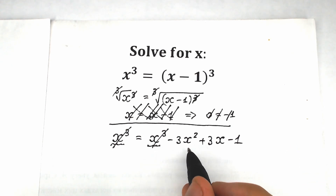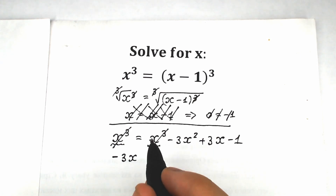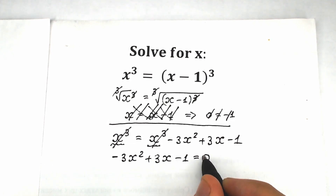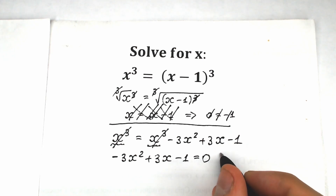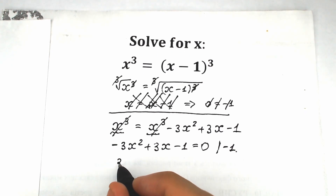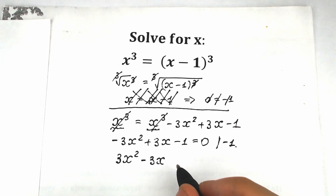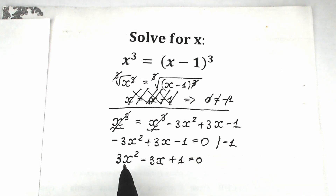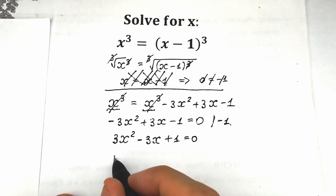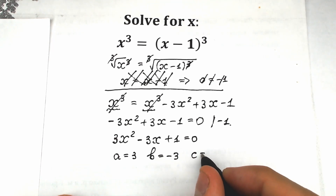After canceling x cubed from both sides, we still have the remaining expression. Let's rewrite it: minus three x squared plus three x minus one equals zero. Multiplying both sides by minus one gives us three x squared minus three x plus one equals zero. This is a quadratic equation — we have an x squared term, an x term, and a constant.